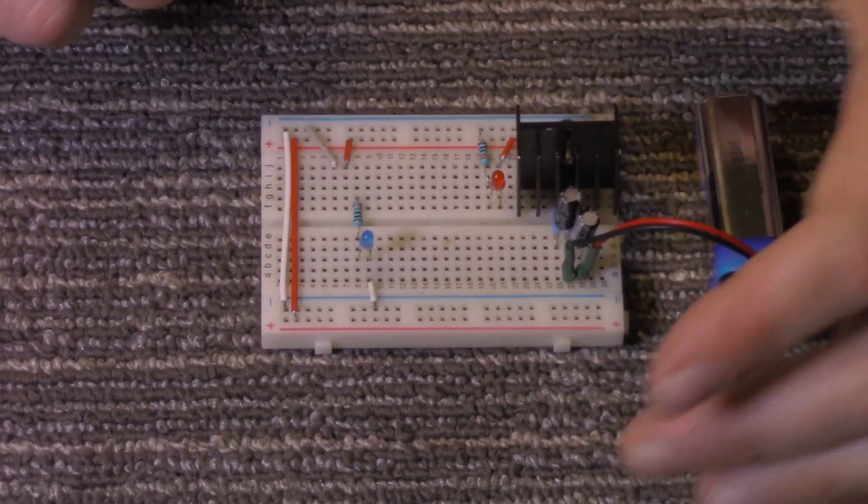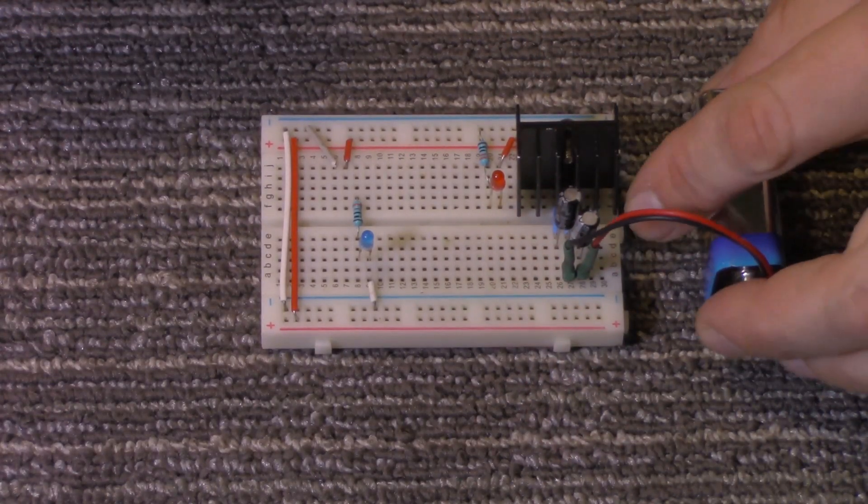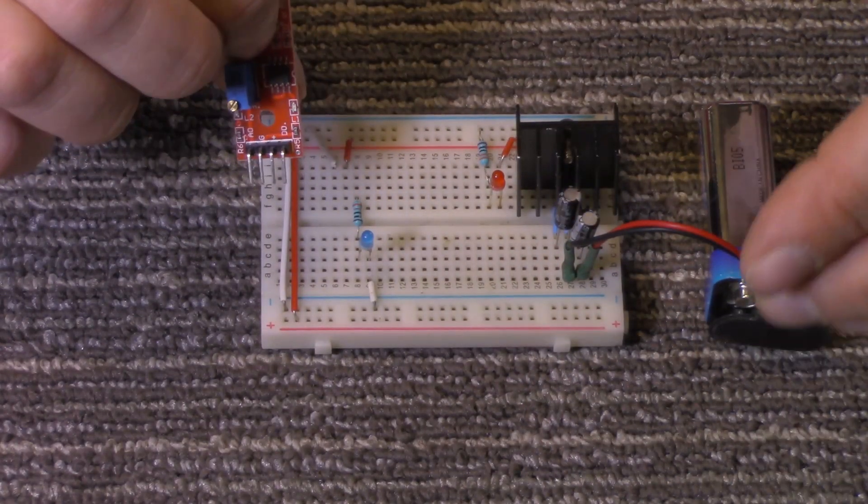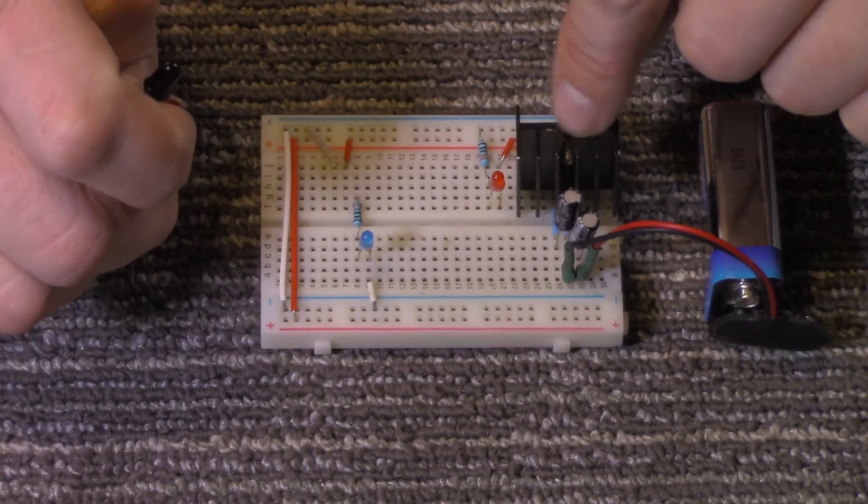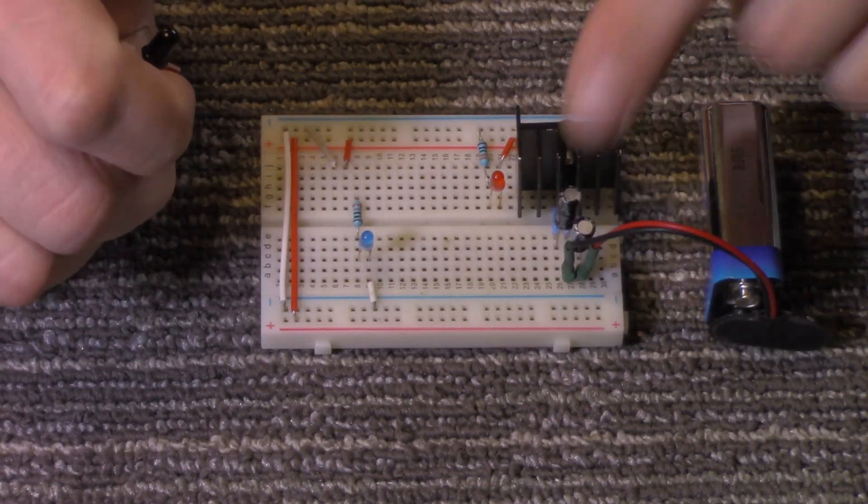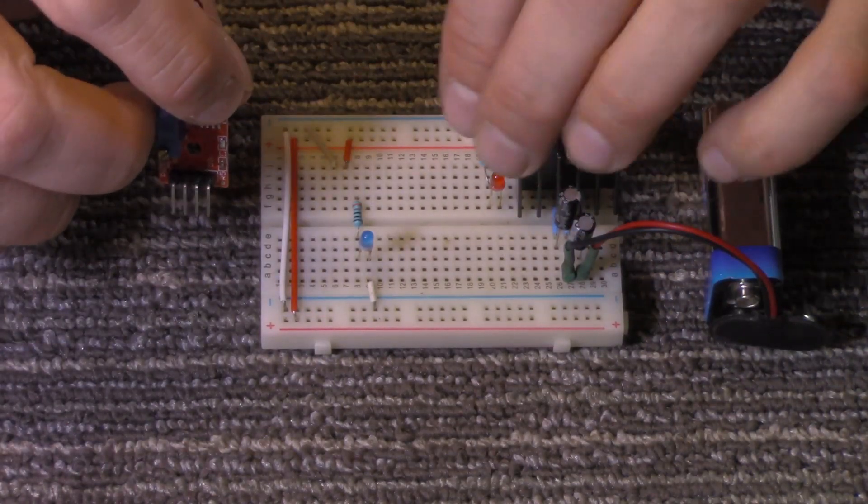I have here, I put together on this board, I just have a 9-volt battery. We're going to be running this with 5 volts. I just have a 5-volt regulator set up here with two capacitors to filter it out, make it a little smoother.